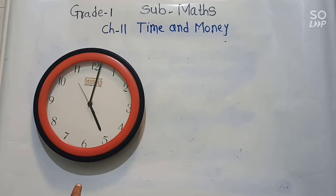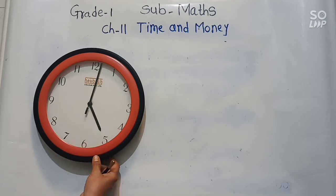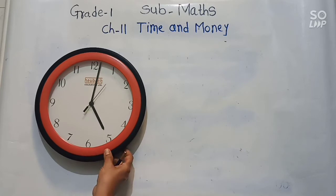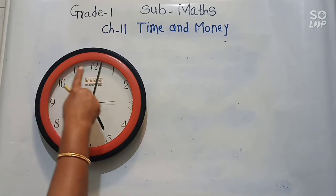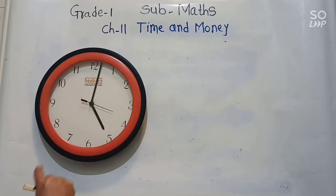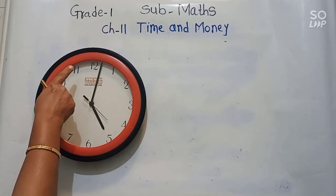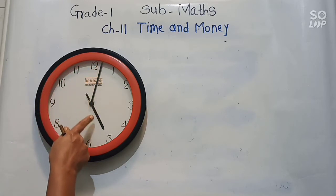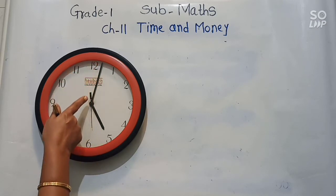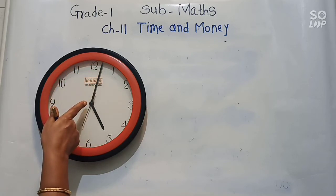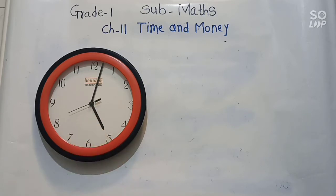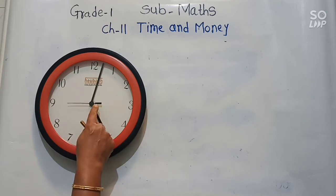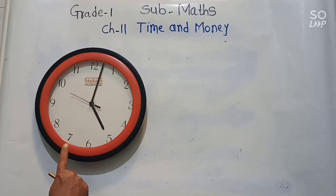This is a clock. Look here — this clock shows us time. Now I will explain the parts of the clock. Here are numbers from 1 to 12. Here are two hands of the clock. This is a long hand, and we call it the minute hand. And this is a short hand, and we call it the hour hand. Some clocks have a third hand, and we call it the second hand.